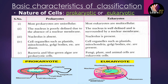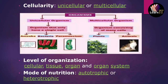Moving to the types of prokaryotes: bacteria and blue-green algae come under prokaryotic cells. When talking about eukaryotes, fungi, plant cells, and animal cells are eukaryotic — including humans, who also have eukaryotic types of cells.